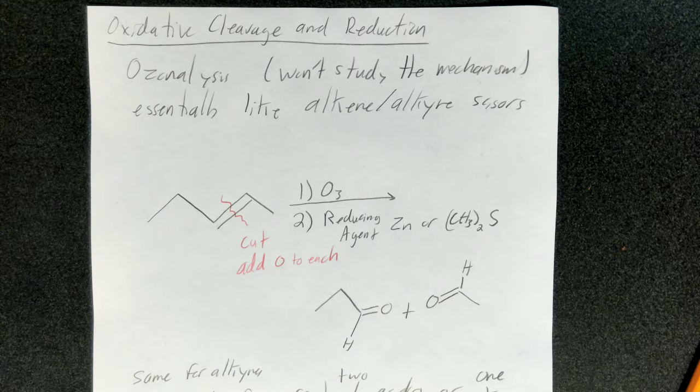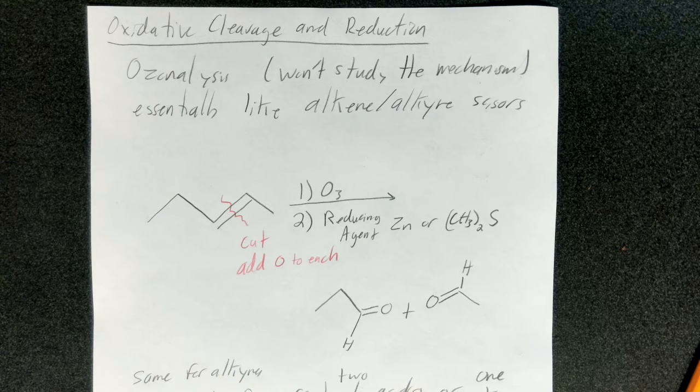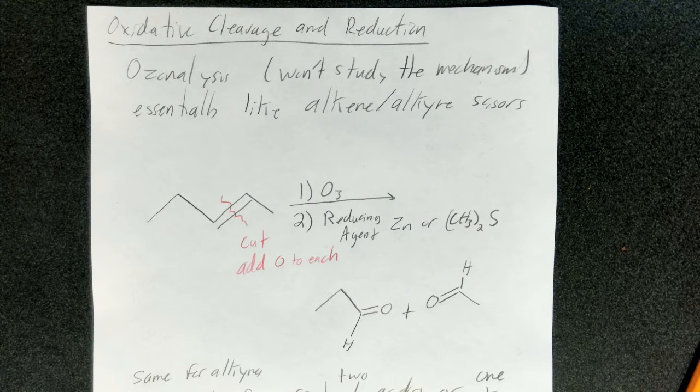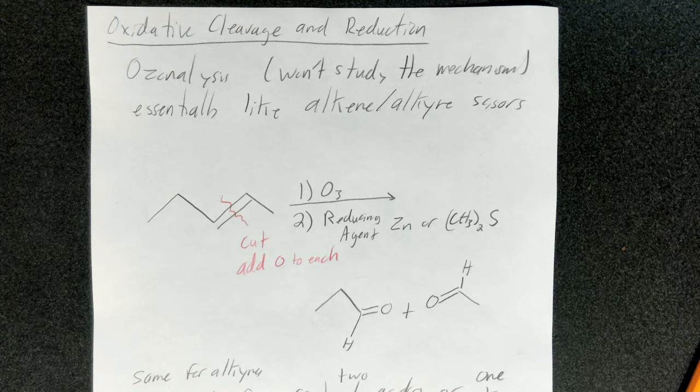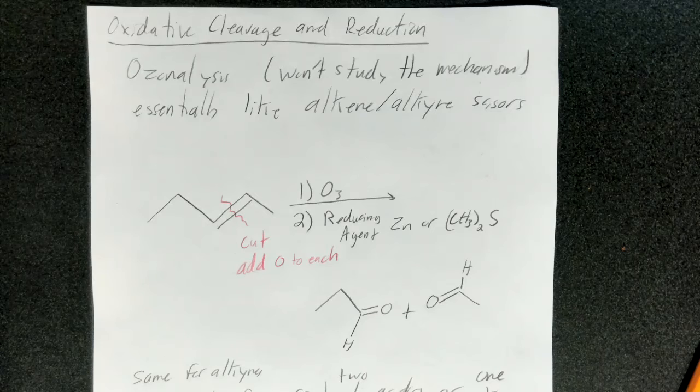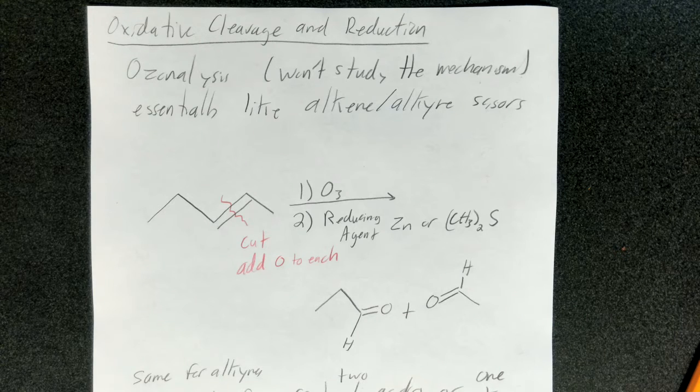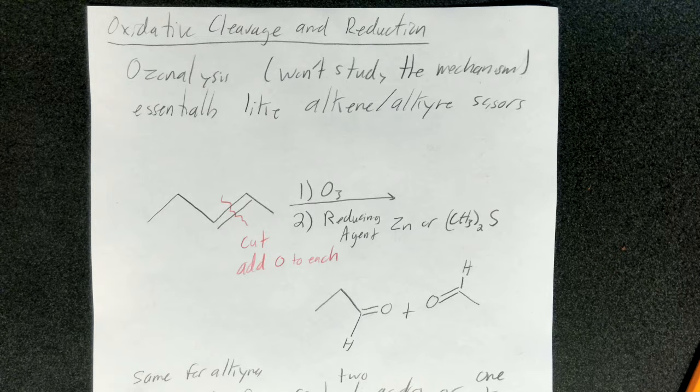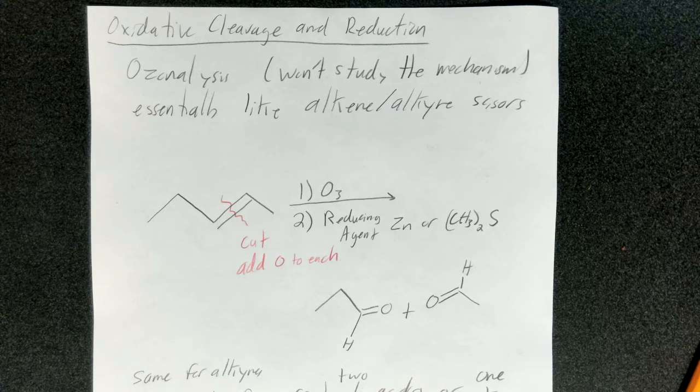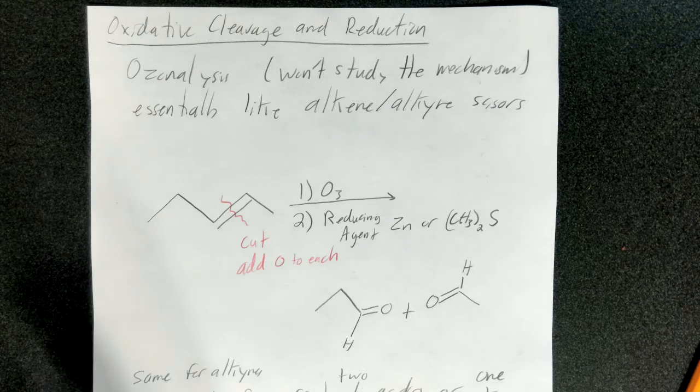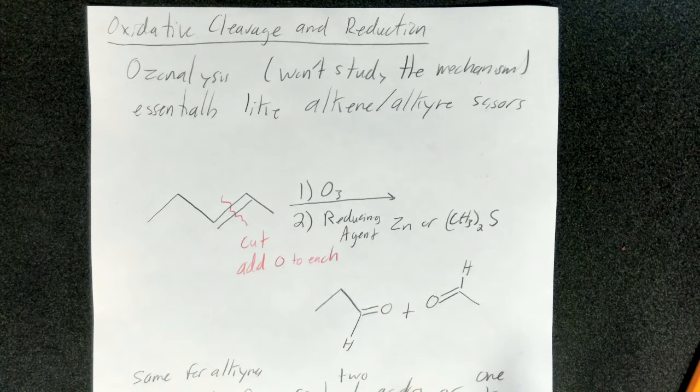Mostly what I expect you to do is to recognize this combination of reagents: ozone followed up by a reducing agent, at least for alkenes, and as we'll see in a moment, a different reagent for alkynes. Recognize that what these reagents do is they essentially act like scissors that cut right across the double or triple bond, in the case of alkynes, and it essentially separates two pieces.